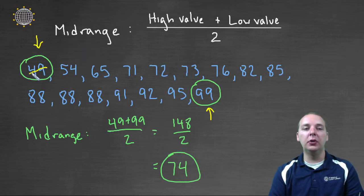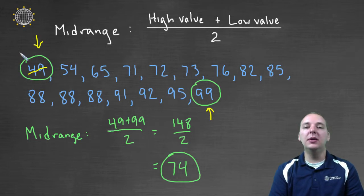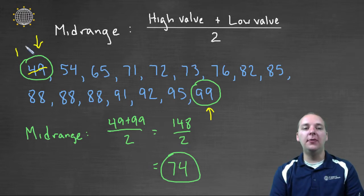And so if one student, if your lowest student, your weakest student, maybe he missed a week of class and came back and hadn't studied at all and made a fifteen, well that's going to greatly affect your midrange. Your midrange will be much lower.